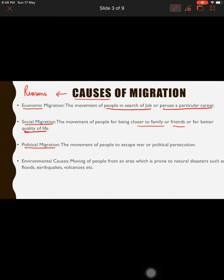The third type is political migration. When people move to escape war or political persecution — meaning poor treatment by the government — and want to escape political conflict, that movement is known as political migration. The fourth cause is environmental: when people migrate from areas prone to natural disasters like floods, earthquakes, or volcanoes, that is environmental migration.